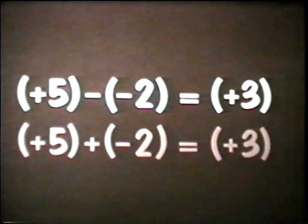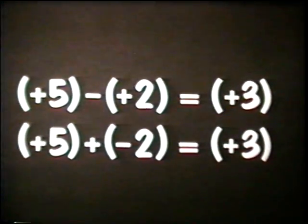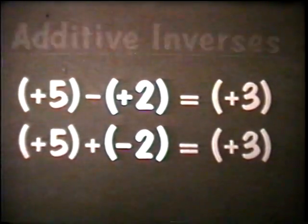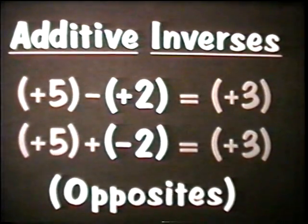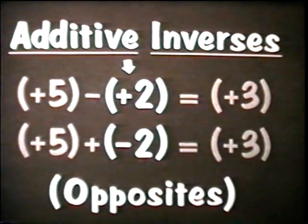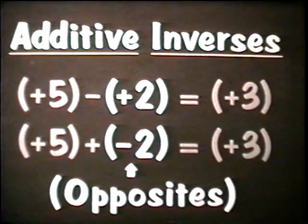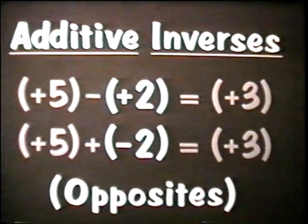This leads to a simple rule for subtracting signed numbers: change the sign of the subtrahend and then proceed as in addition. There's another way to think of this rule. Positive two and negative two have the same absolute value but different signs. Such numbers are called additive inverses, or opposites. In this case, positive two is the additive inverse of negative two and vice versa. To subtract positive two, we added its opposite, negative two.